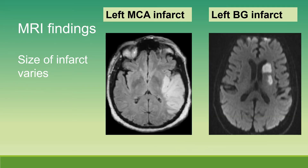MRI findings: on the left MCA infarct, you can see a cortical stroke, or a stroke that involves the cortex. For left basal ganglia infarct, it affects the deep basal ganglia area.